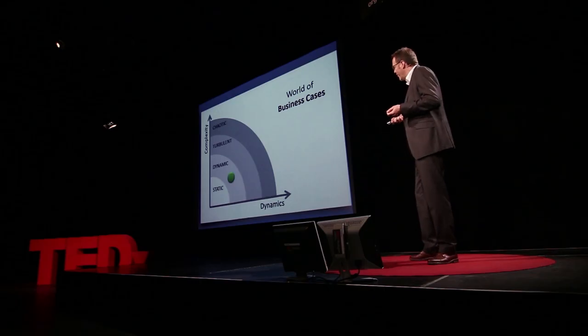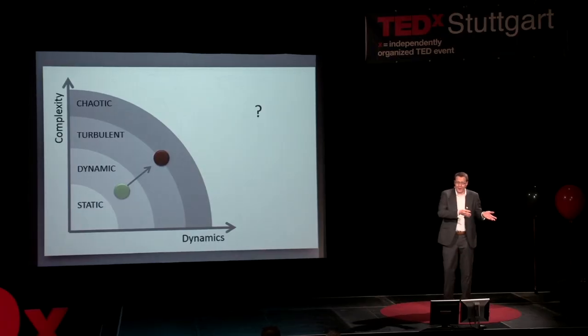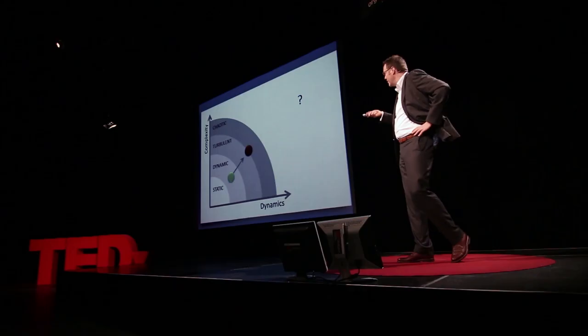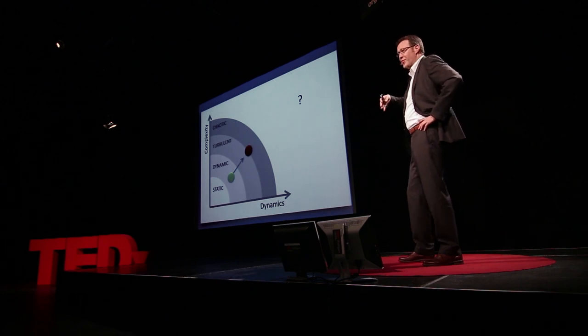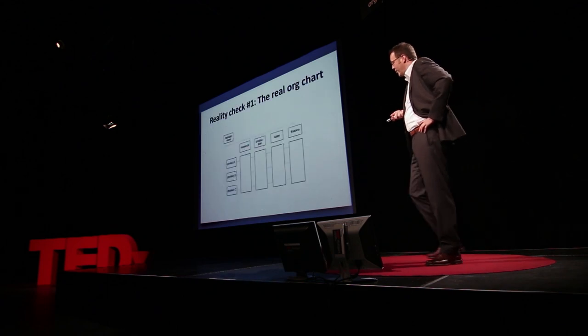What happens if we go to the regime of turbulent or even chaotic systems? We have multiple futures — it could be this or that — and we don't know which one will materialize. We have moving targets and no predictability. When today's system for organizing things meets turbulent or chaotic systems, we call the result a matrix organization.